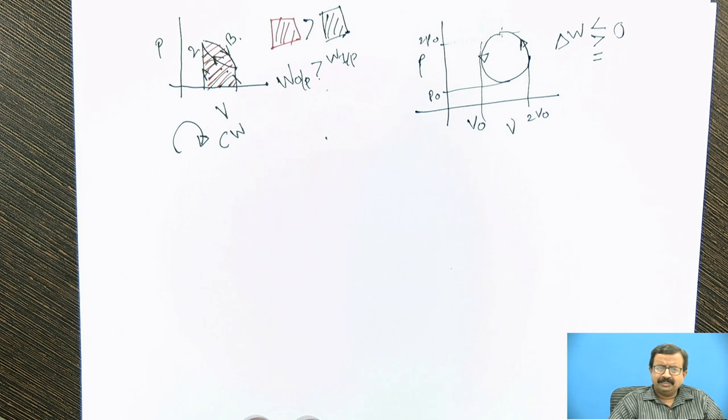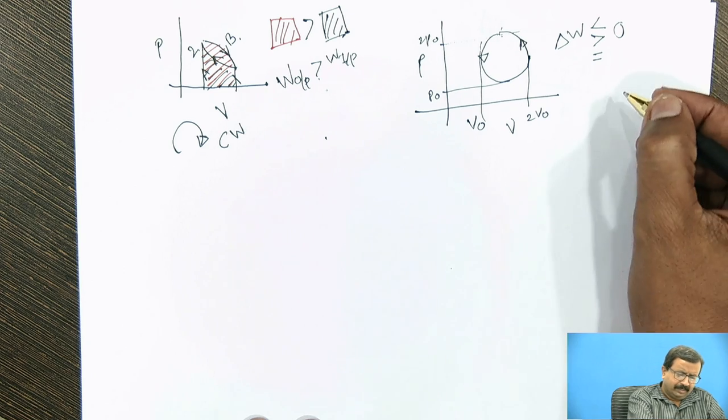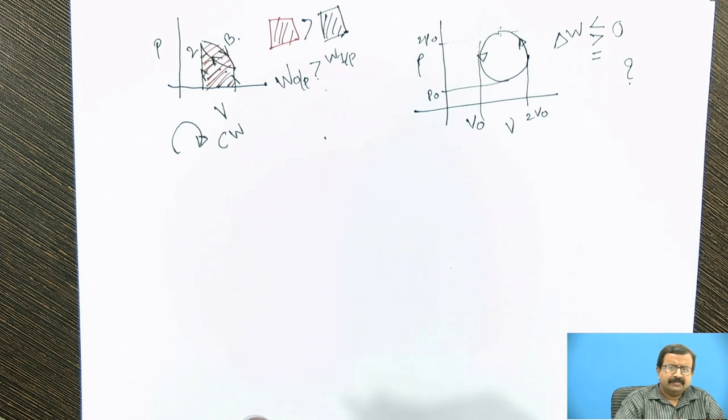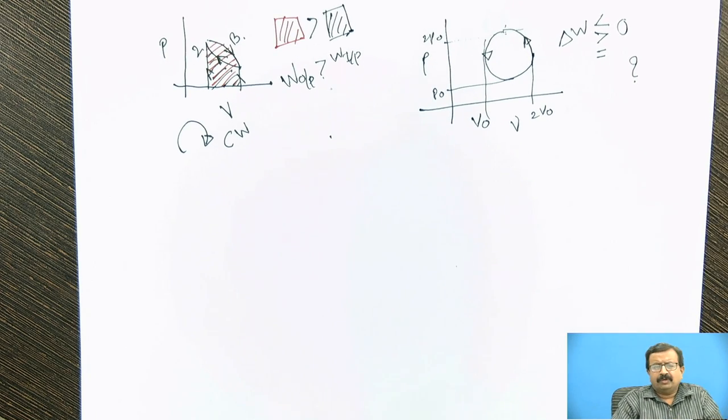Some work is done because there is area under the p-v diagram. If it is less than 0, work is being supplied. If it is greater than 0, work is being obtained. So find the answer for this. And then now we proceed for our first law genesis.